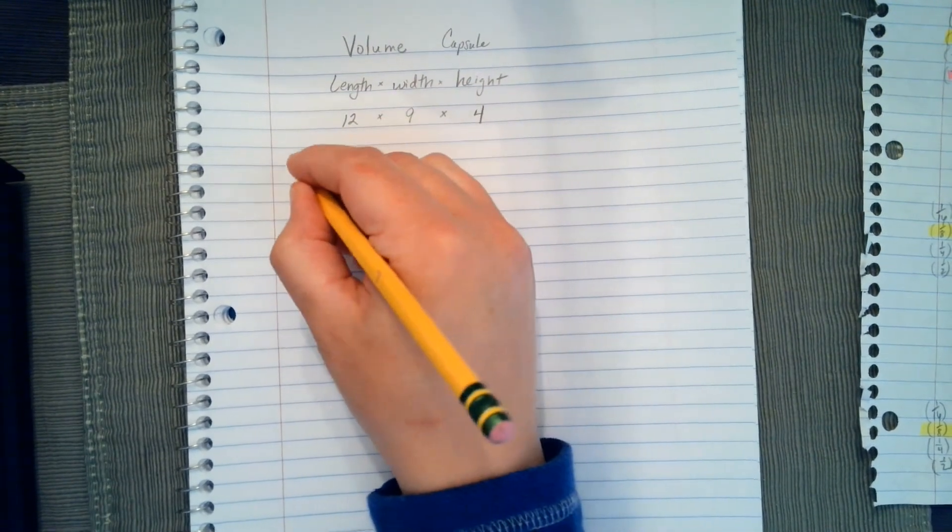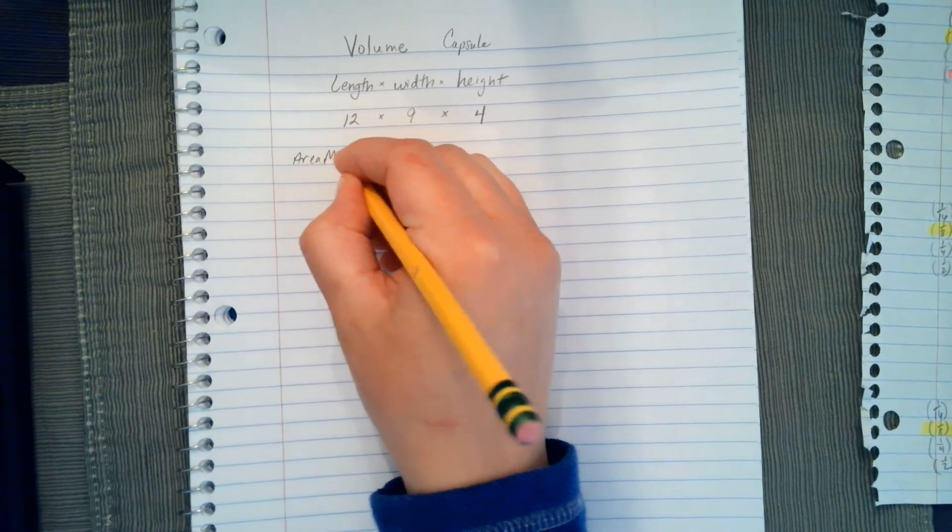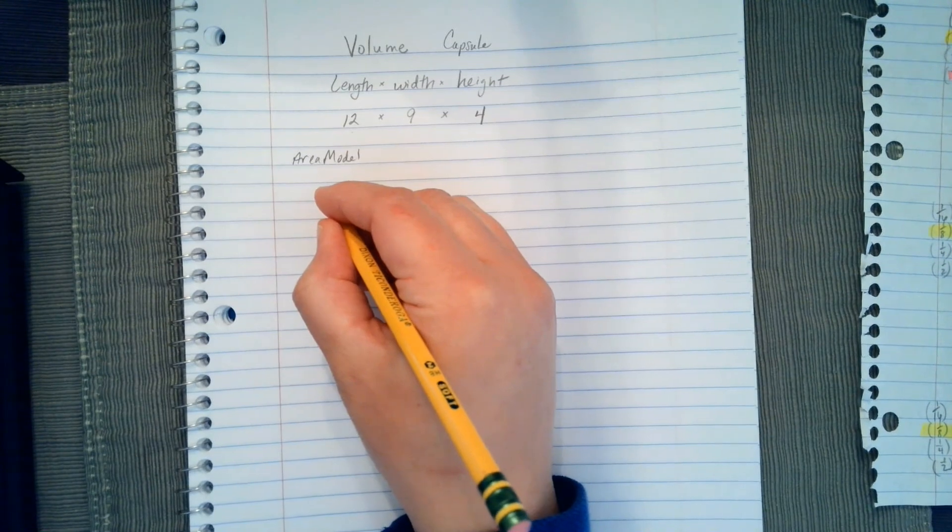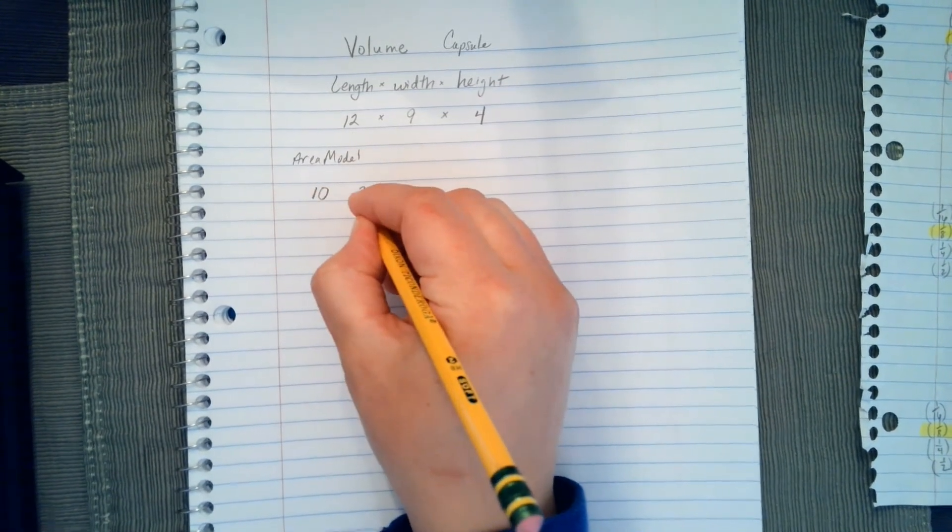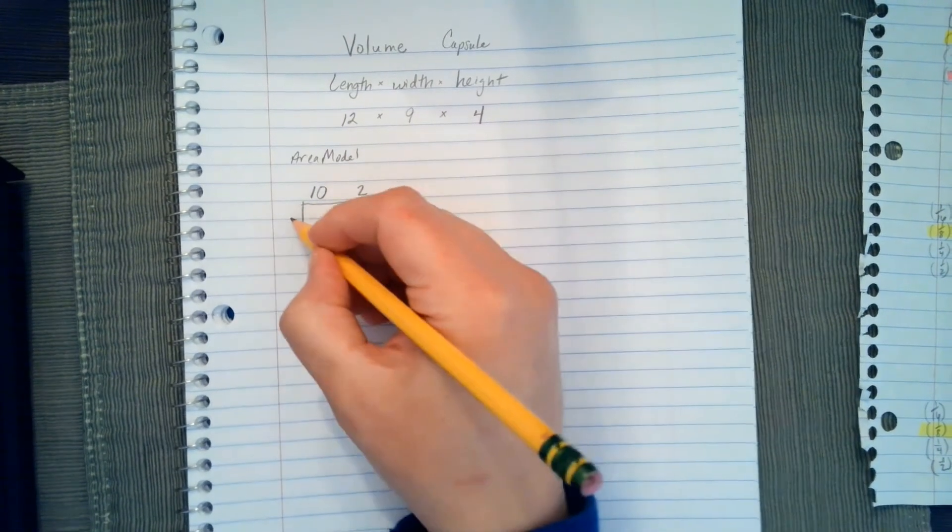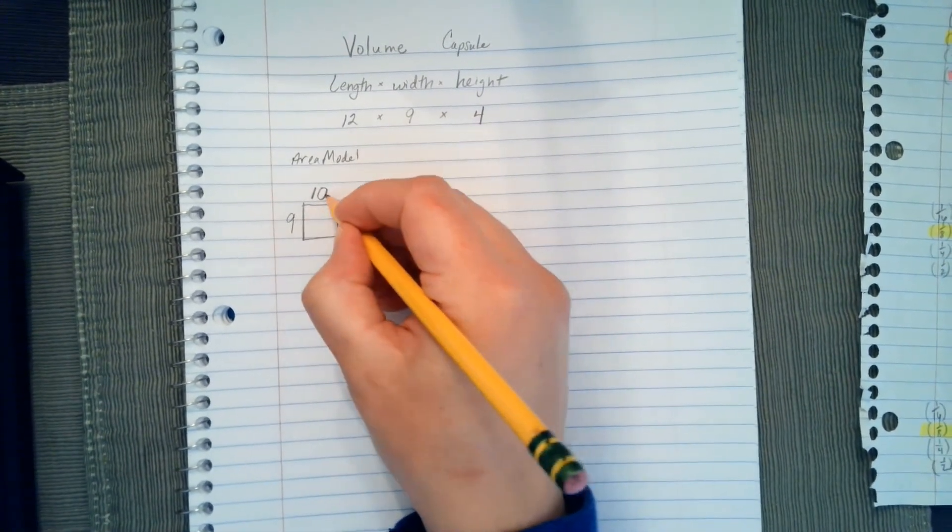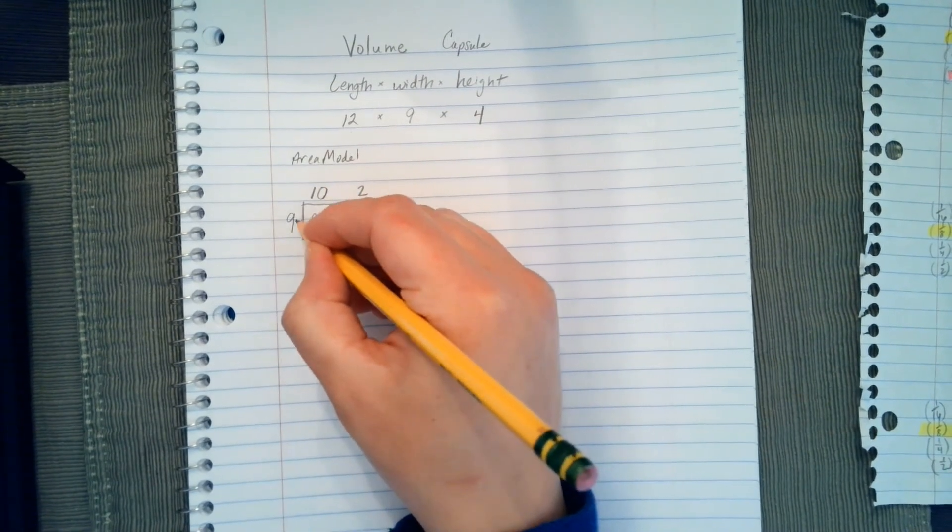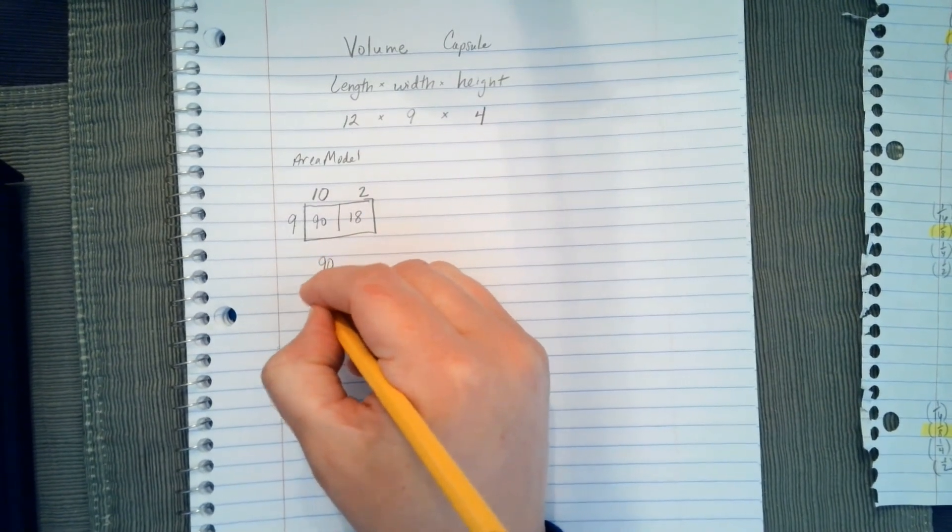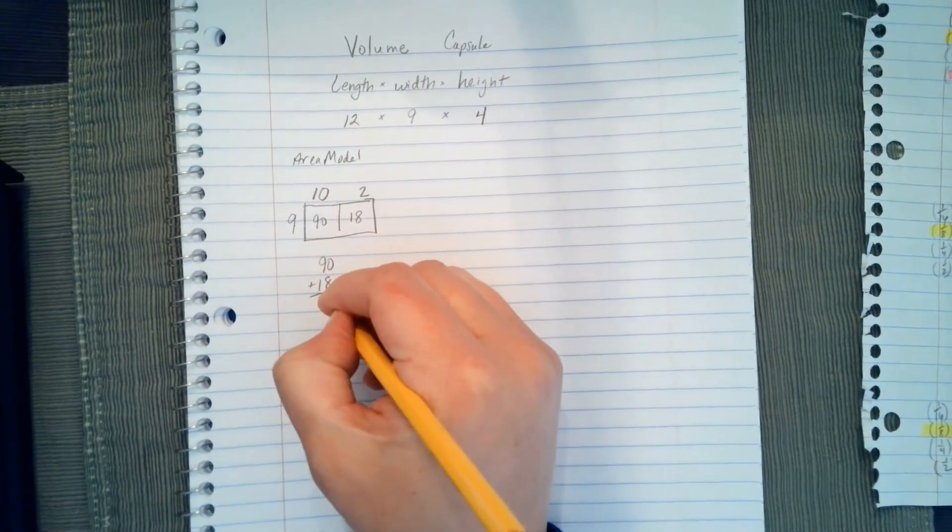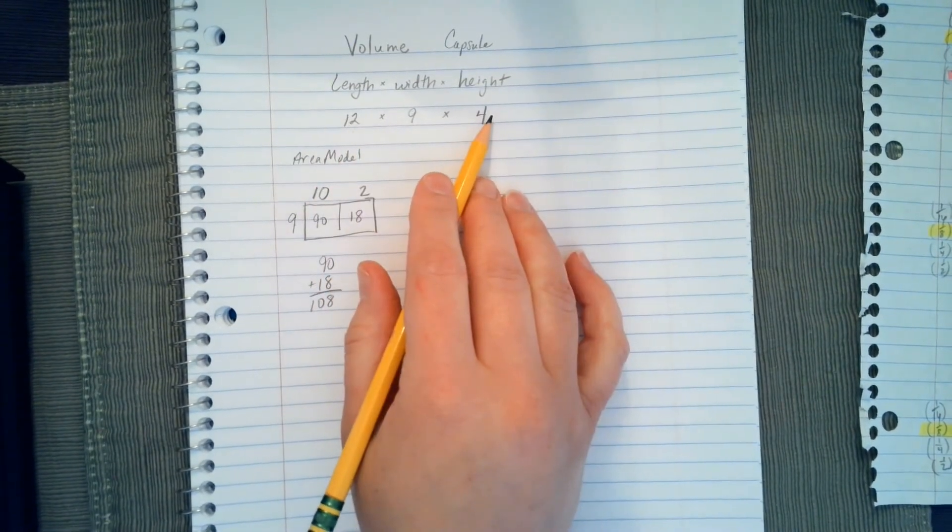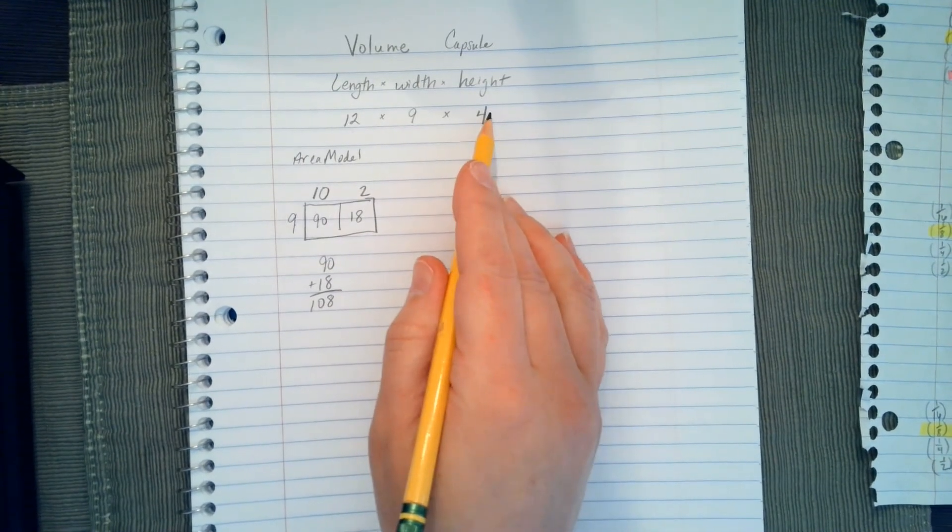I'm going to take 12. I'm going to start with our area model. So I'm going to break 12 into 10 and 2. I'm going to multiply it by 9. 9 times 10 is 90. 9 times 2 is 18. When I add these together, I end up with 108. But that's only for my length and width. I now need to take this 108 and multiply it by 4.